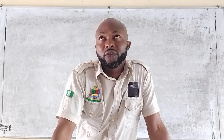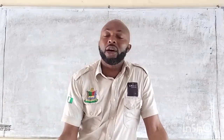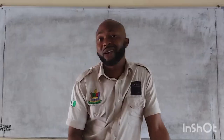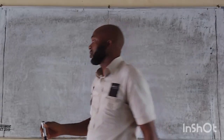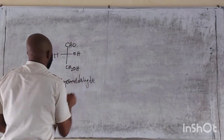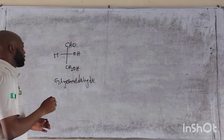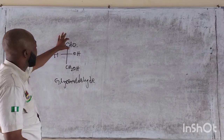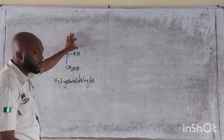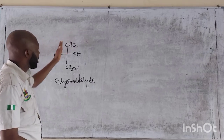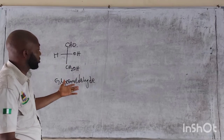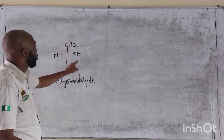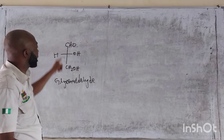Which one of them should be fructose? Let's break it down. We start with the first simple sugar which is the glyceraldehyde. This is our glyceraldehyde which contains our aldehyde functional group. It also contains the OH group — three carbon atoms and one OH.